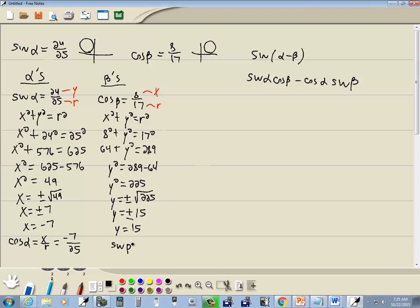We need sine beta for our formula. And sine beta is equal to y over r. So we'll have 15 over r, which is 17.